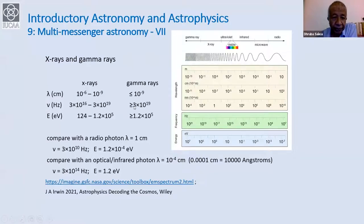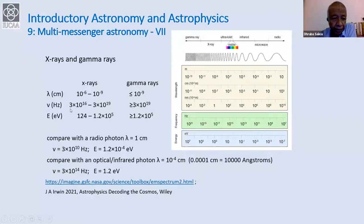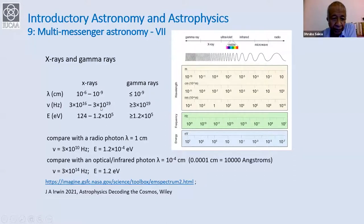You might find slightly different numbers depending upon the text you use, and the difference in numbers is also partly due to the difference in techniques used to measure X-rays and gamma rays. When you look at the frequency, for X-rays it is about 10 to the power of 16 to somewhere about 10 to the power of 19 hertz, and then the gamma rays take over.